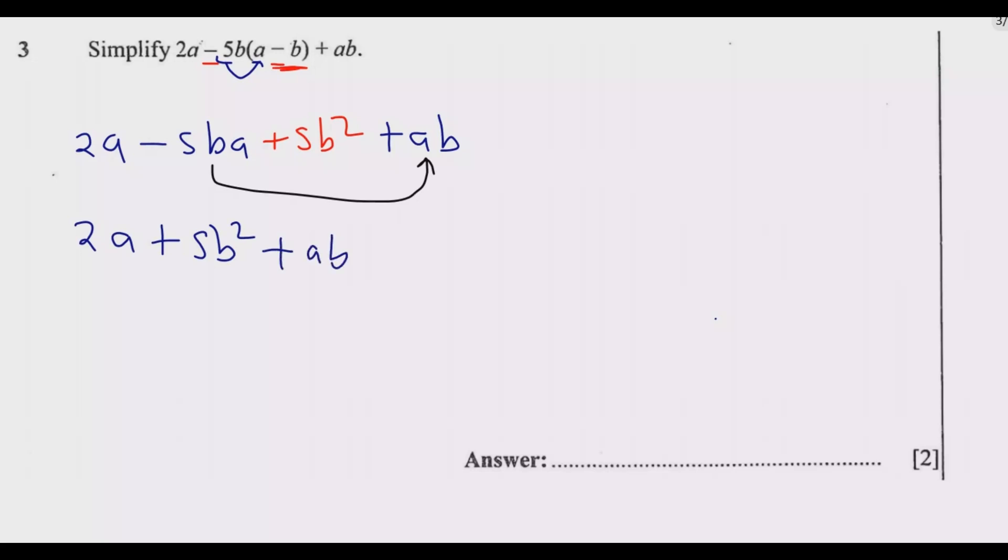Again, the tricky part is here. Then what we have next is 2a + 5b², then ab minus 5ba, which gives us negative 4ba. That's what we remain with.